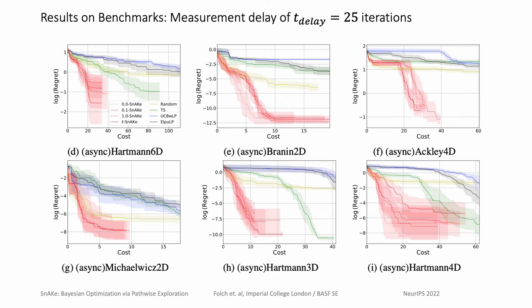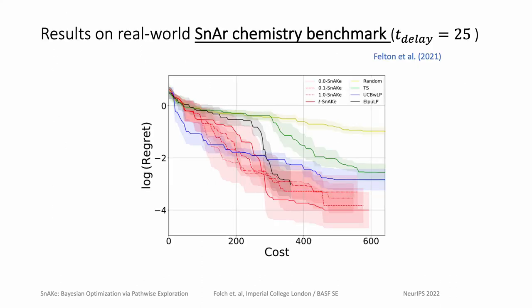If we start looking at benchmarks with delay, the results are even better. This time, SNAKE significantly outperforms all other baselines at low cost. The reason for this is because asynchronous batch optimization methods strongly focus on experimental diversity, which leads to very large and costly input changes.